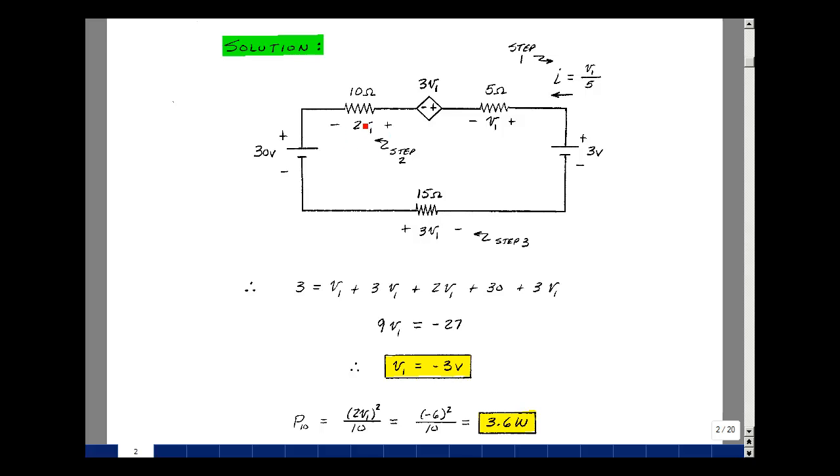Since we know the voltage is 2V1 and we know the value of V1, let's use that one. So 2V1 squared divided by 10 would be the power dissipated in the 10 ohm resistance. The value of V1 is equal to minus 3. So we're going to get minus 6, square that, divide by 10, get 3.6 watts. So we have 3.6 watts absorbed in the 10 ohm resistance. And this is supplemental problem 4.2.